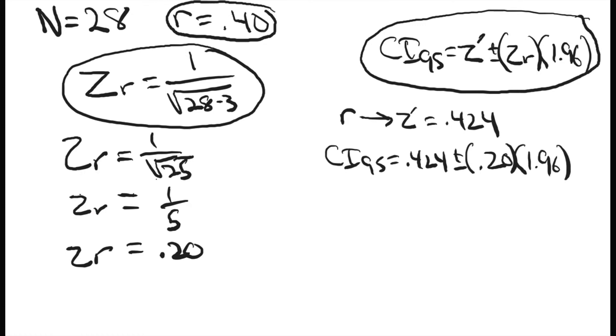Equals 0.424 plus or minus 0.392. Then we can just add these together. CI95 equals 0.032 at the low end and 0.816 at the high end.